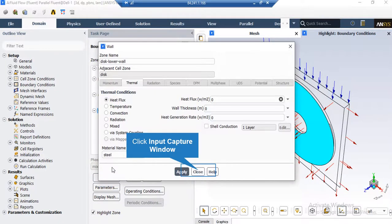After clicking on this wall boundary and then clicking on edit, under the thermal tab, you can see that the thermal condition of heat flux is defined for this boundary. And the rate of heat flux applied on this boundary is equal to zero, which means that this wall is adiabatic.